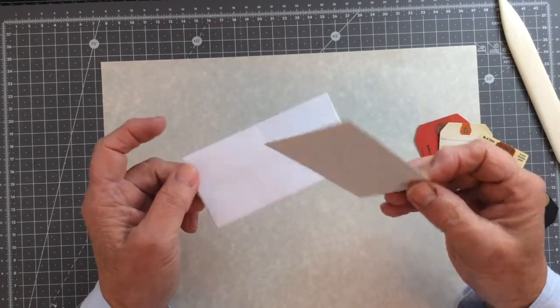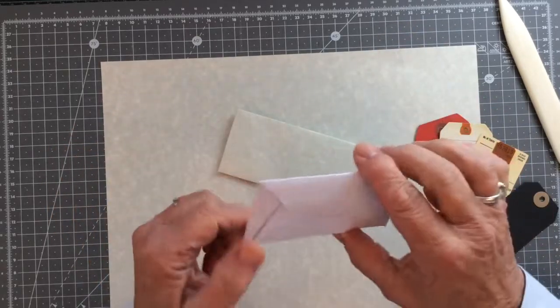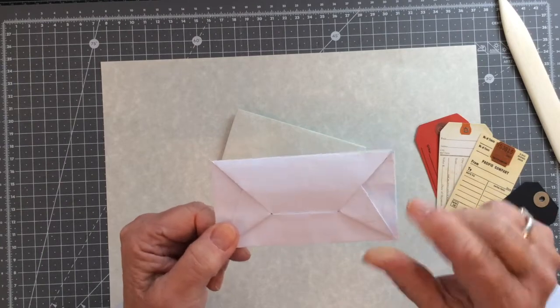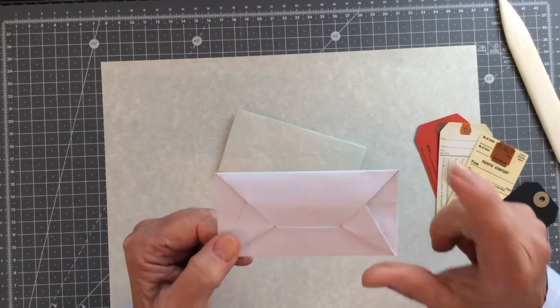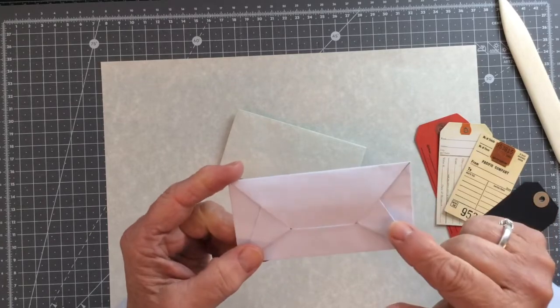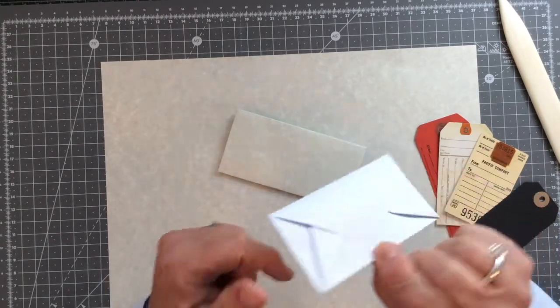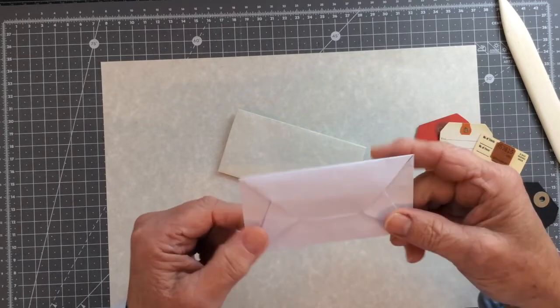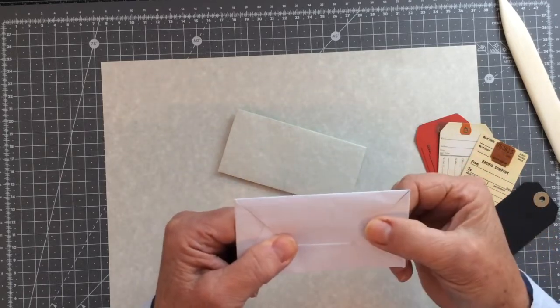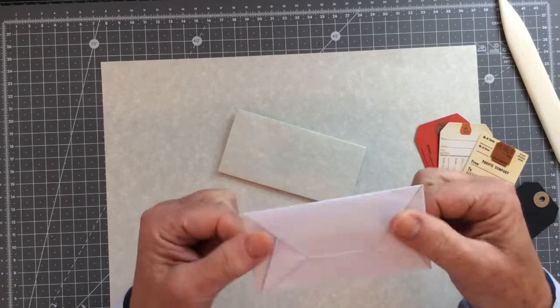This little one is slightly more dimensional than the ones I showed you in part one and two. So you need to bear that in mind when you're choosing your paper to make this one. Now, this is one that I've made in just normal copier paper and I would say that would be perfect for inclusion in a journal. It's not too thick at all.